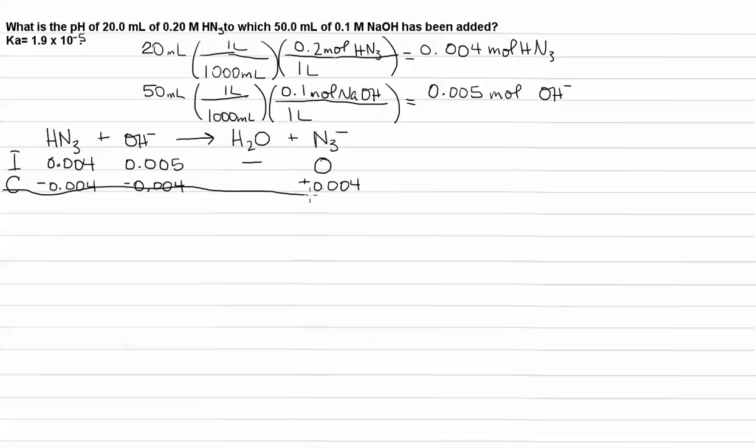We're going to gain 0.004 moles of the N3. So, that means final, we have 0 moles of weak acid HN3. We have 0.001 moles of hydroxide. And we have 0.004 moles of N3.